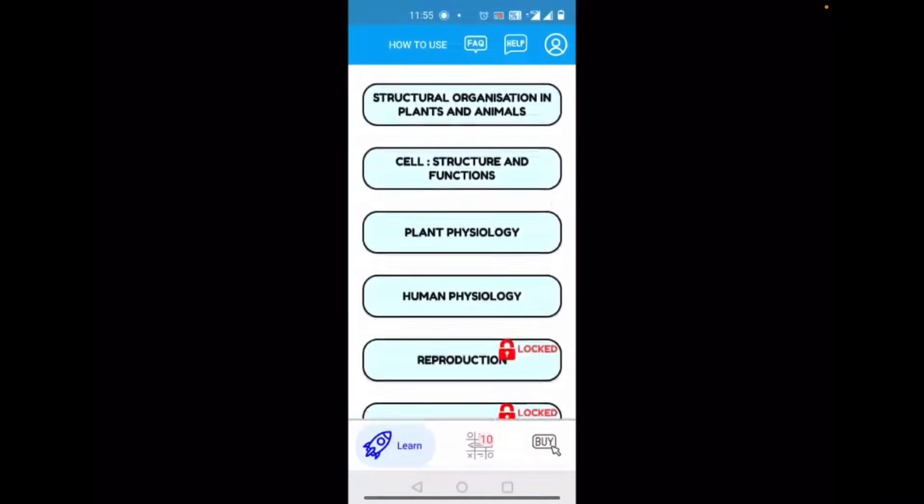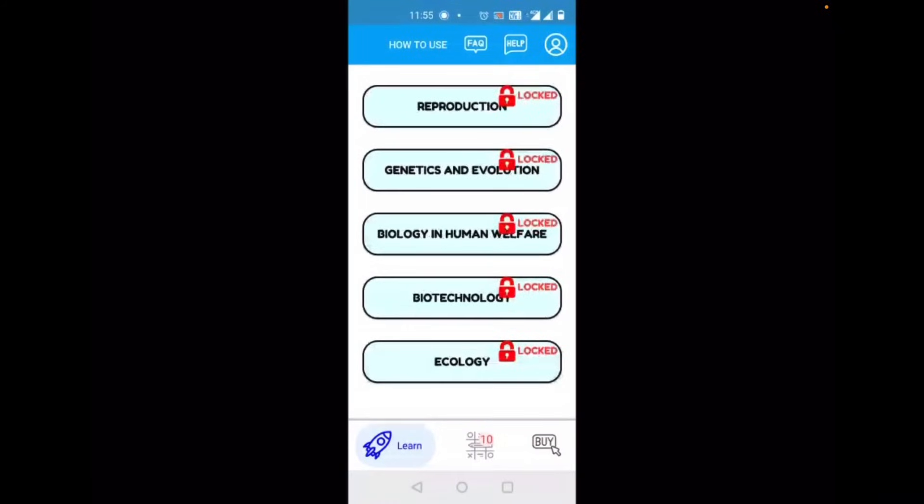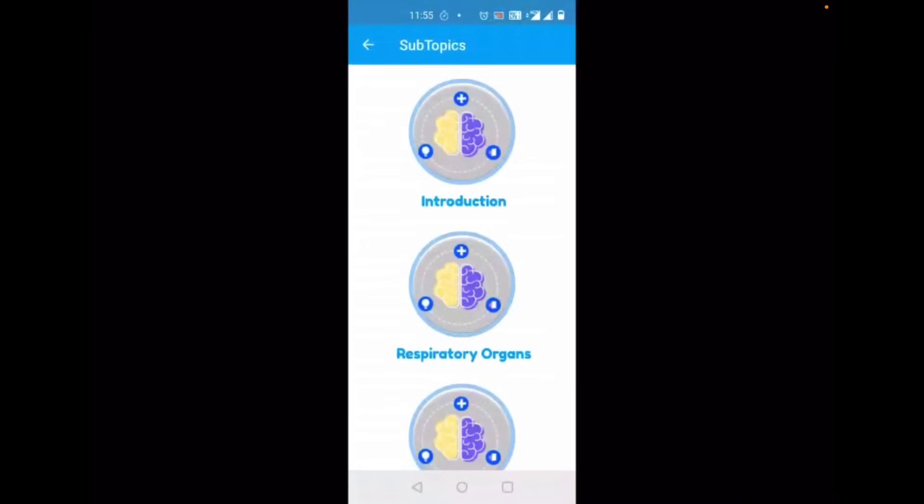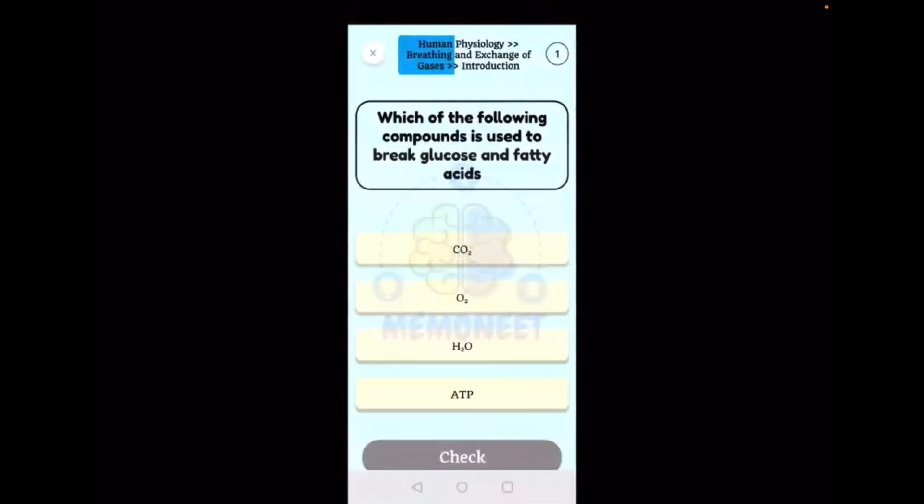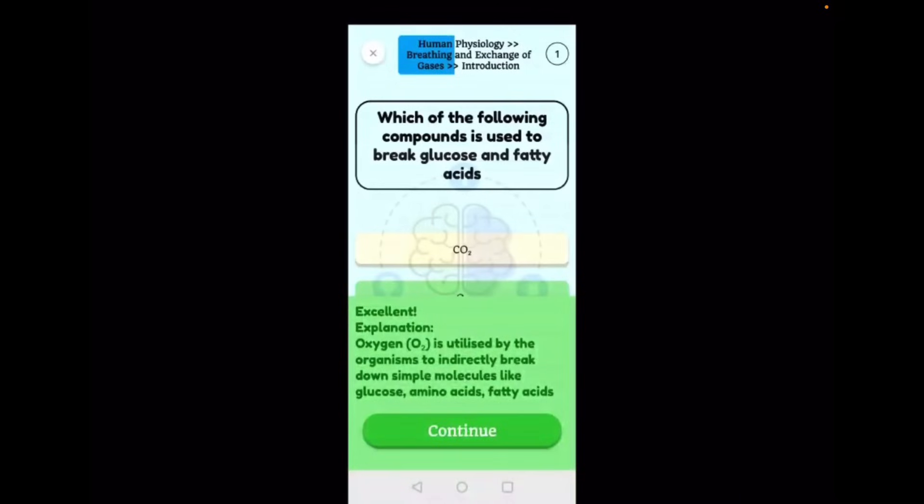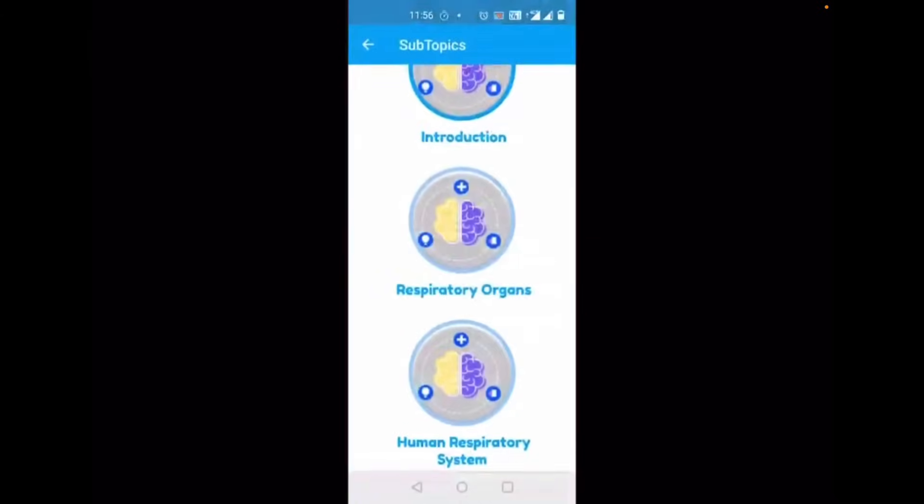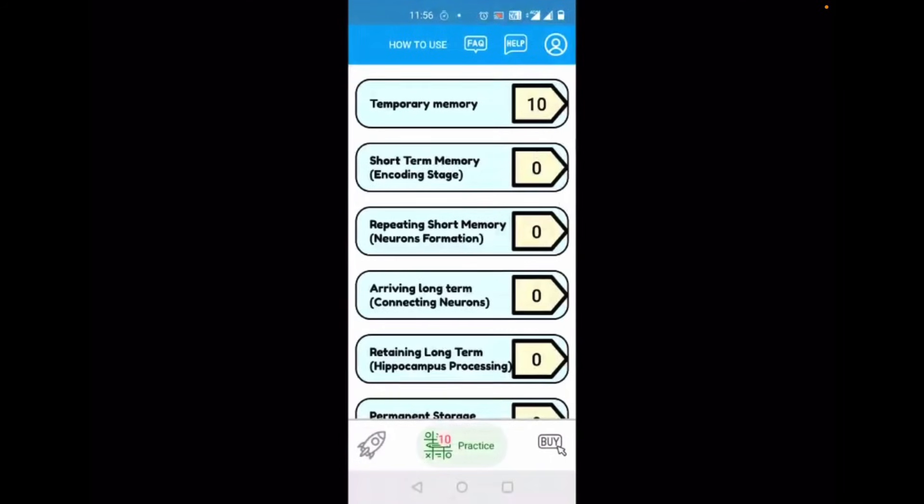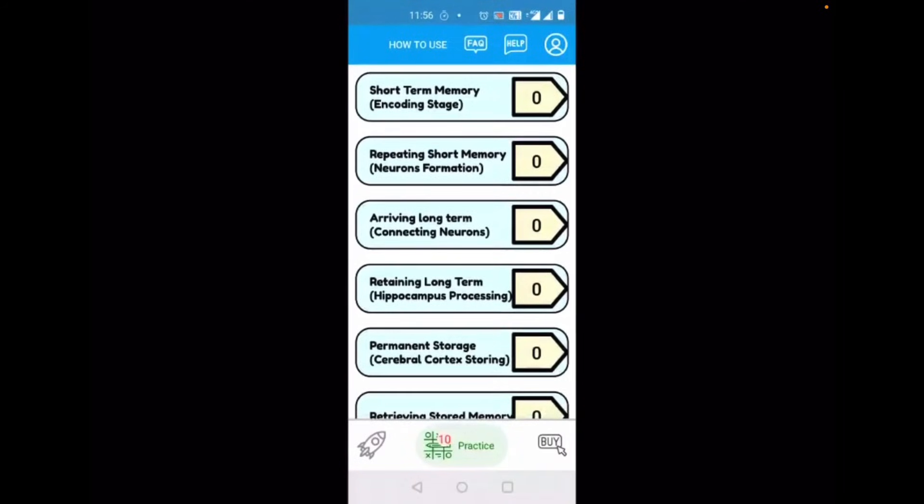This is the Memo NEET app. As you can see, every question from every chapter of NCERT. We'll take breathing and exchange which we recently did. From the introduction, which of the following is used to break glucose and fatty acids? Answer is oxygen. We can check the answer. From every line of NCERT they have put up questions. You can check the explanation of the questions, check the answers. Apart from that, one really important thing that they do is that they have this spaced repetition formula so that from temporary memory, just practicing that question, if you keep on repeating in spaced repetition, it will slowly move to your long-term memory and finally into your permanent storage.